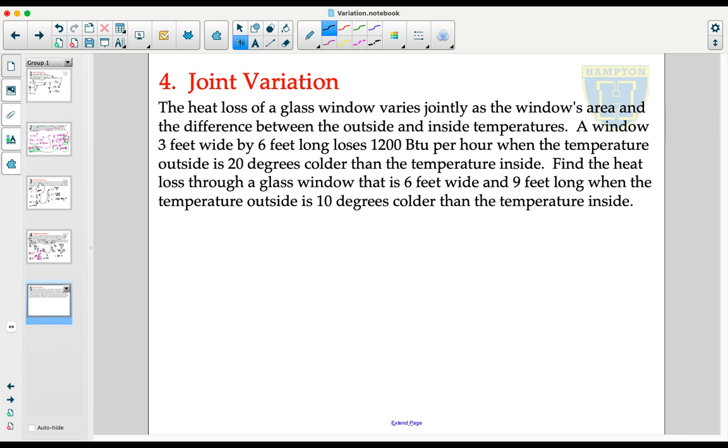we're going to have two different variables that are causing potential heat loss out of a glass window. So we're going to be measuring the heat loss, thinking of that as our dependent variable, but we're going to be measuring it jointly based on the area of the window and the difference between the outside and the inside temperatures.